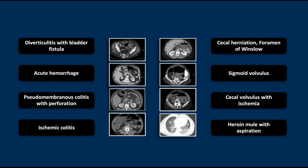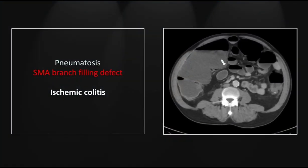Our next case is of ischemic colitis. This patient has pneumatosis on the posterior aspect of the cecum and ascending colon, obviously not obeying the laws of gravity and density. There is also a very small filling defect within one of the superior mesenteric vessels — wrapping around from the artery, lying immediately adjacent to the vein, which is patent and posterior.